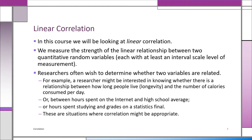Researchers are often trying to find out whether two variables are related. For example, you might be interested in looking at longevity—how long people live—and how many calories they consume per day. Or you might be interested in the amount of time spent on the internet and high school average, or college GPA. There are lots of cases where you might be interested in just looking at the correlation.